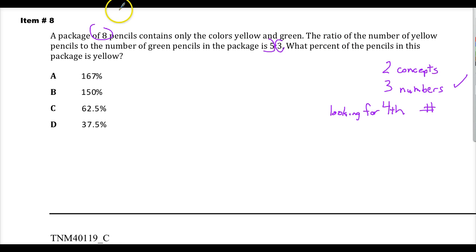I have yellow pencils as one, green pencils as two, but you'll notice it says a package of eight pencils. That would be eight total pencils. So, that would be three items, so it's not a proportion.